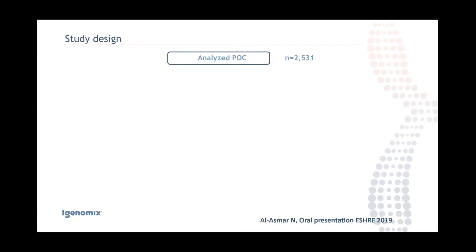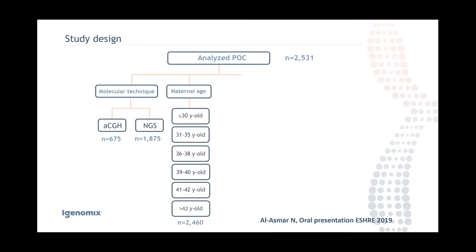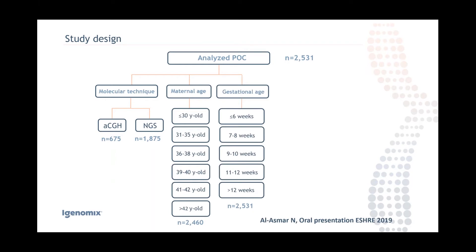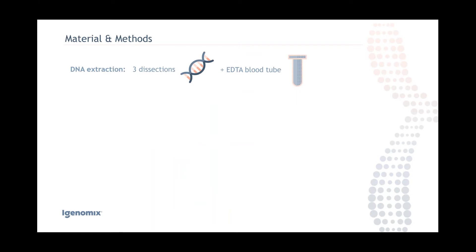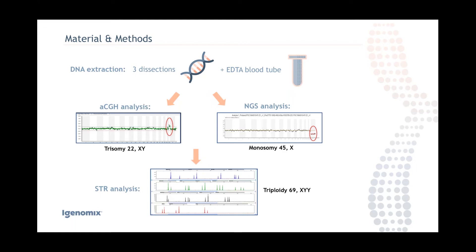Let me introduce our work presented at ESHRE 2019 in Vienna as an oral presentation. At that time, we had analyzed more than 2,500 products of conception. We checked two different molecular techniques: array CGH and next generation sequencing. We also performed analysis by maternal age, gestational age, and oocyte origin. For each case, we took three dissections plus an EDTA blood tube from the mother or gestational carrier to run the STRs, and we performed the molecular approach with array CGH and NGS, running STR analysis when needed.